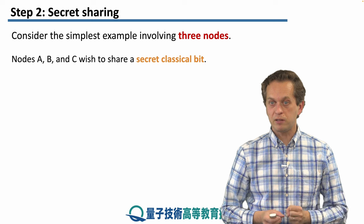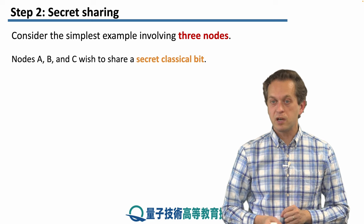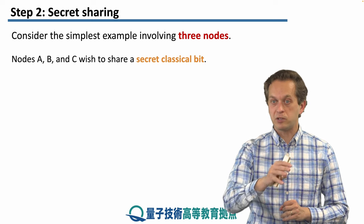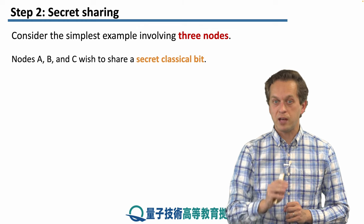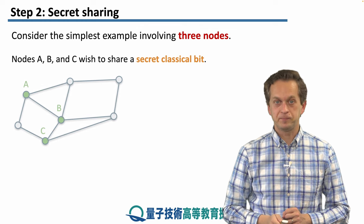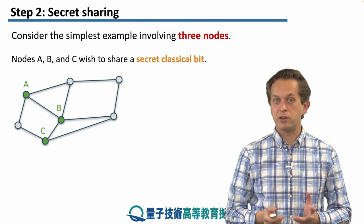And they're going to try and share a secret classical bit. So they're going to have one bit that one of them knows and would like to spread this information only between the subsets of A, B, and C, without revealing this information to the rest of the nodes.